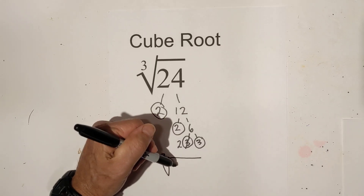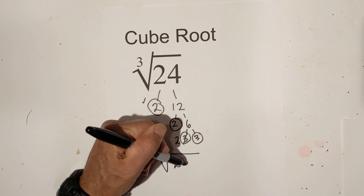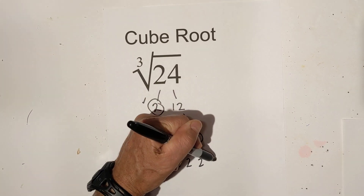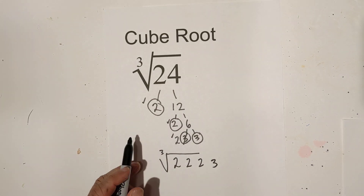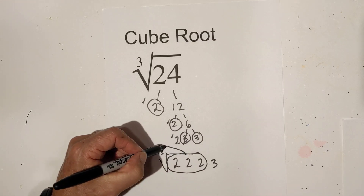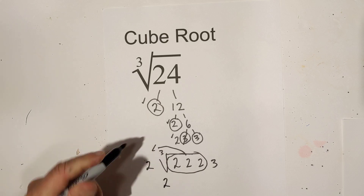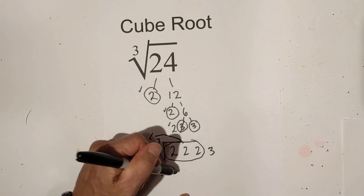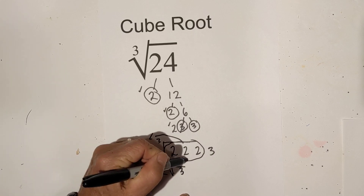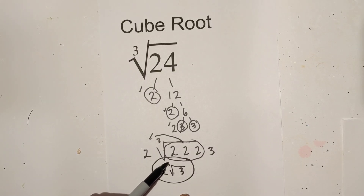You don't have to do this — I just think it's easier because you can visually see what you're doing. I'm going to rewrite the numbers. I'll put a check there, a check here, and a check there. And then I have a 3. Since you're working with cubes, you pull out triplets. So I'm going to pull out these and it will be a 2. It will be 2 cube root 3. So the cube root of 24 simplified is 2 cube root 3.